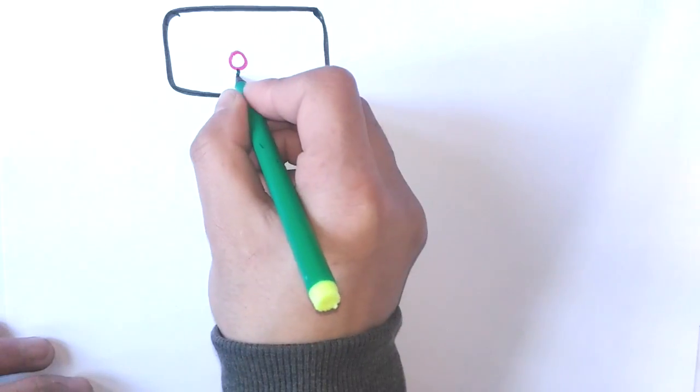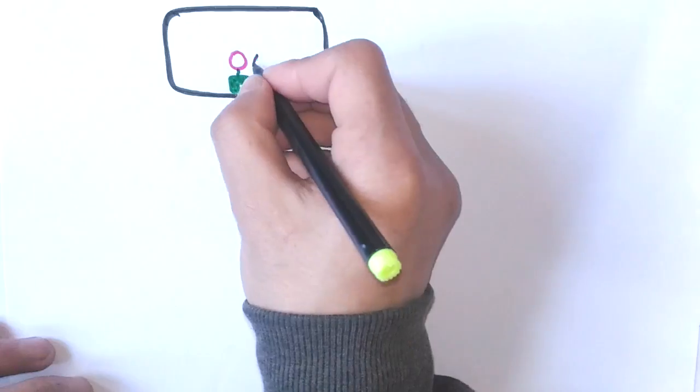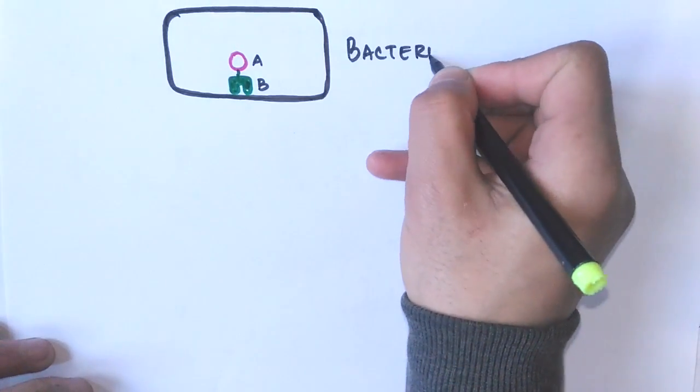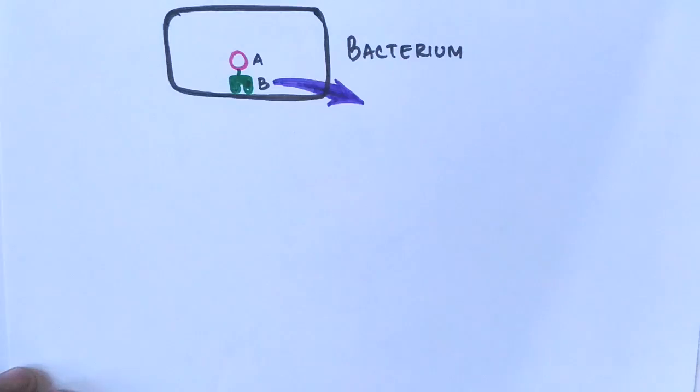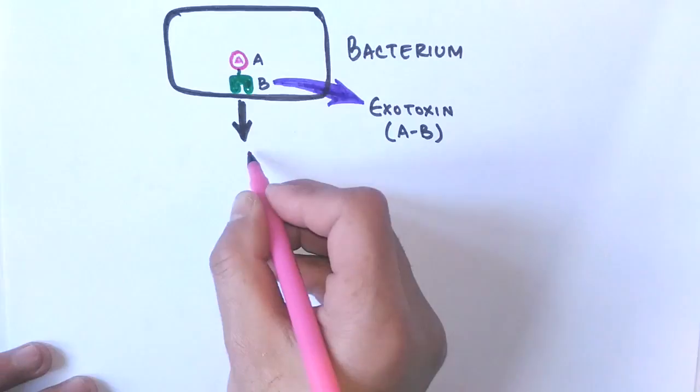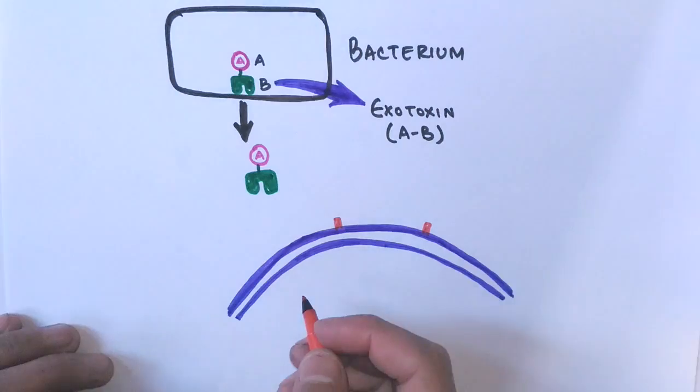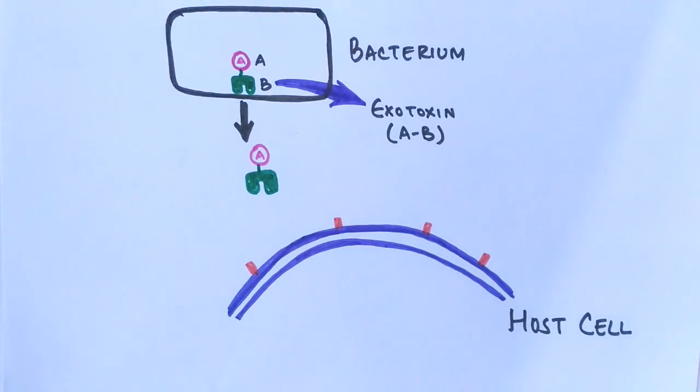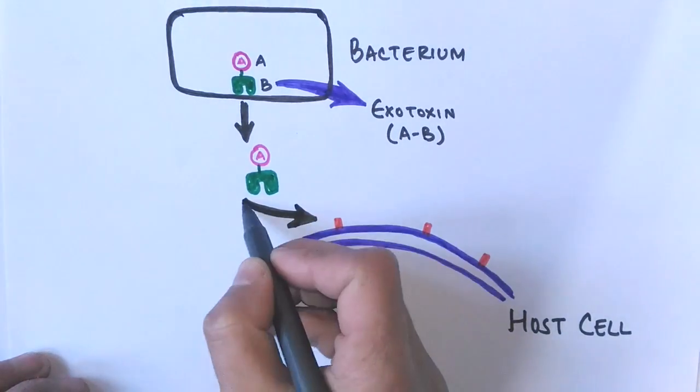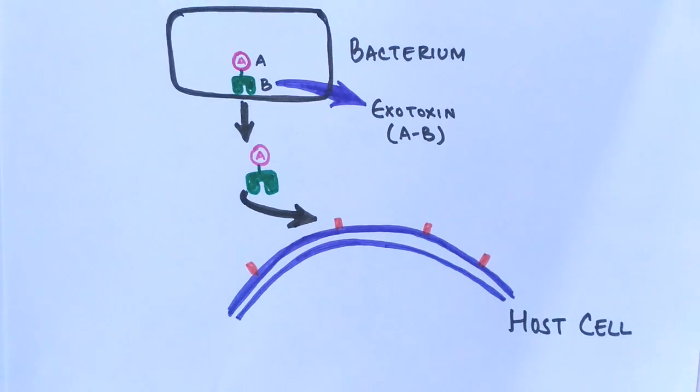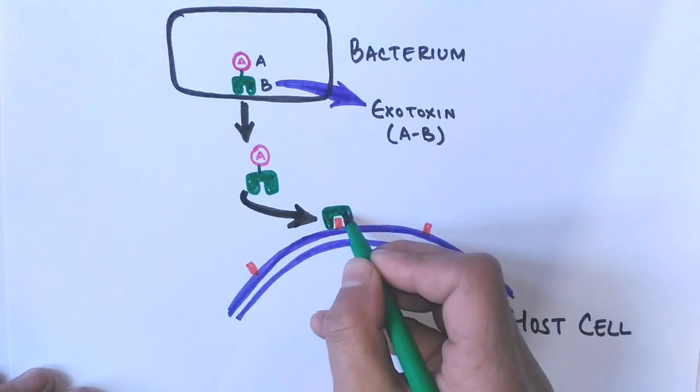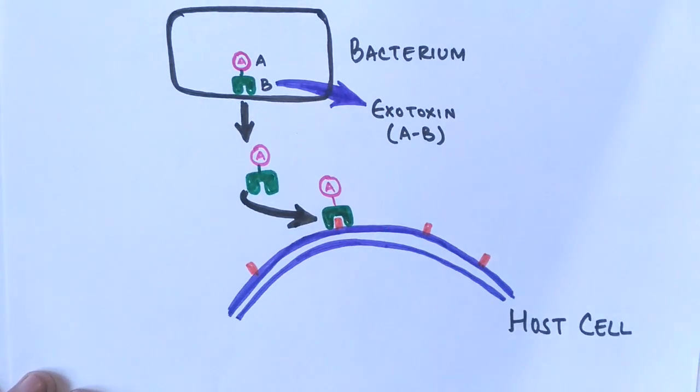Now let's see in detail how the action mechanism of exotoxins occurs. We see a bacterium which produces an exotoxin inside it. We'll take the example of AB exotoxin because this is one of the most secreted exotoxins by microorganisms. This AB exotoxin is secreted out of the bacteria during log phase. On the other hand, we have a host cell with receptors that will accept this AB exotoxin.